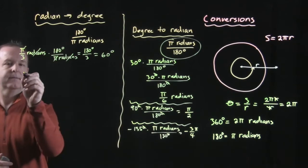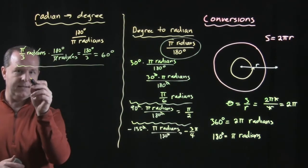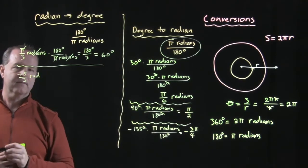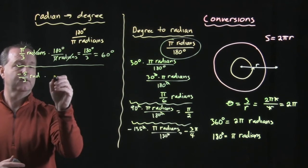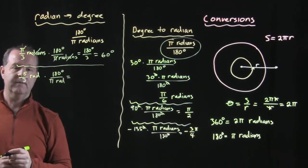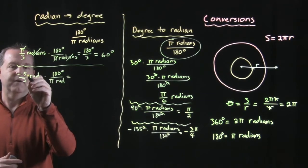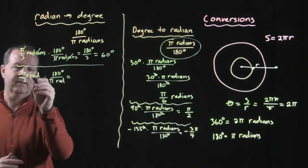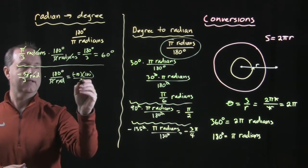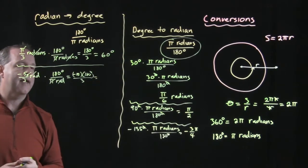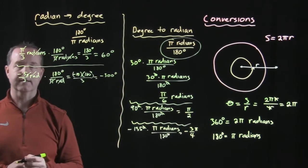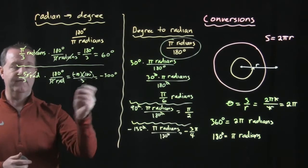Let's look at negative five pi thirds radians — convert that to degrees. Using the conversion factor 180 divided by pi radians: pi and radians cancel out. I'm left with negative five times 180 divided by 3 degrees. 180 divided by 3 is 60; 60 times negative five gives me negative 300 degrees. So negative five pi thirds radians is equivalent to negative 300 degrees.